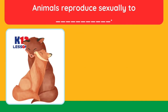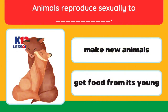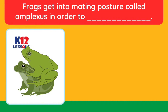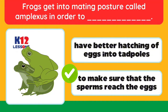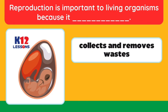Animals reproduce sexually to _____. Make new animals. Get food from its young. — Frogs get into a mating posture called amplexus in order to _____. Have better hatching of eggs into tadpoles. To make sure that the sperm reach the eggs. — Reproduction is important to living organisms because it _____. Collects and removes wastes. Continues the existence of organisms.